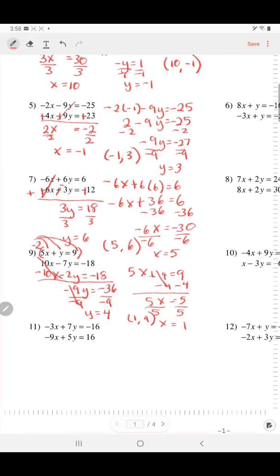We try number 11. Multiply this equation by negative 3. The reason for that is now we have a positive 9. So 9x minus 21y equals positive 48, if you distribute to each of these. Now the negative 9 and positive 9, they will cancel. Add the 5 and the negative 21. That would be negative 16y equals 64. Divide by negative 16.